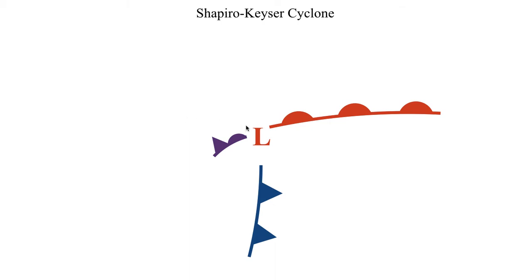Looking at the structure of the Shapiro-Kaiser cyclone, the cold front is kind of detached from the low. Compared to an extratropical cyclone, this results in a T-shaped frontal structure as opposed to a right angle between the warm front and cold front. As the current of warm air wraps around the center of the cyclone, you get what's referred to as a bent back front — normally represented by x's in a row connected by a dashed line, though the occluded front symbol can also be used since it is kind of an occlusion process, with warmer air overtaking colder air.